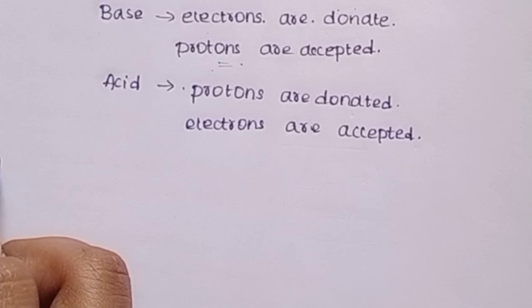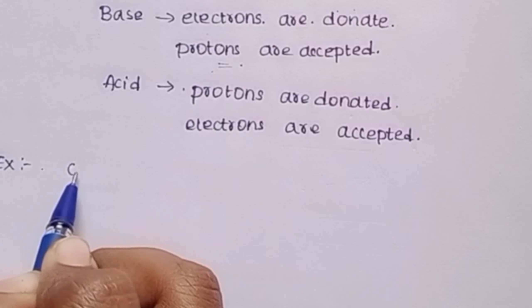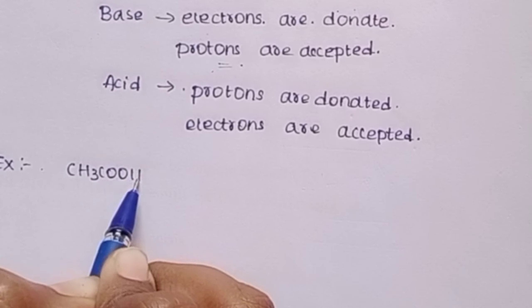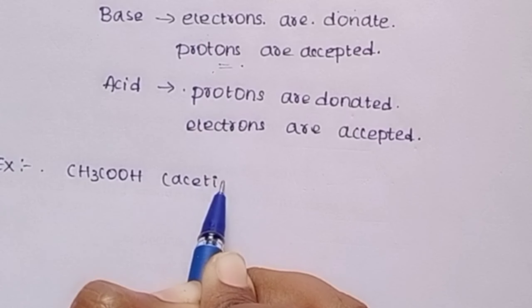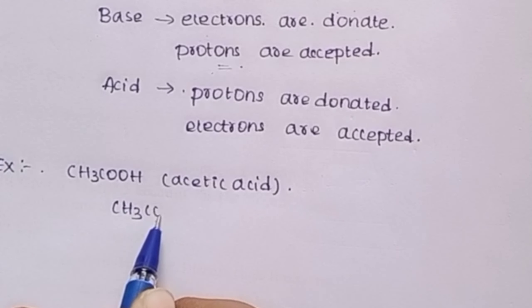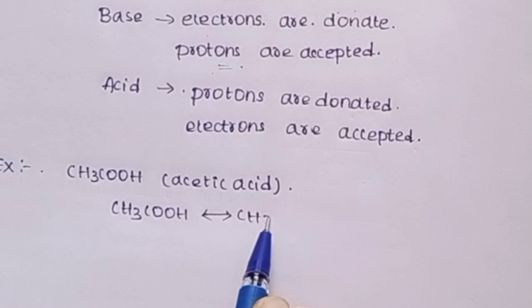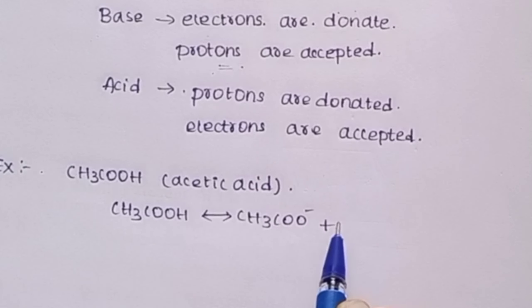Next, examples. Amphiprotic example is acetic acid. When acetic acid dissociates, it forms CH3COO minus plus H plus. Here, base electrons are donated, protons are accepted, protons are donated.